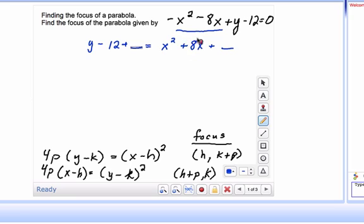So remember what you do is you take this middle term, you take half of it, and then you square it, and that's the number you're going to add to both sides.